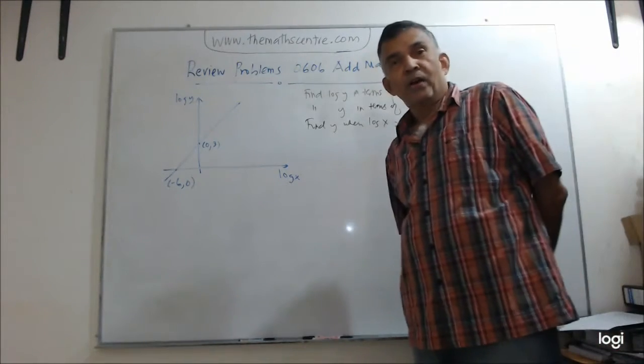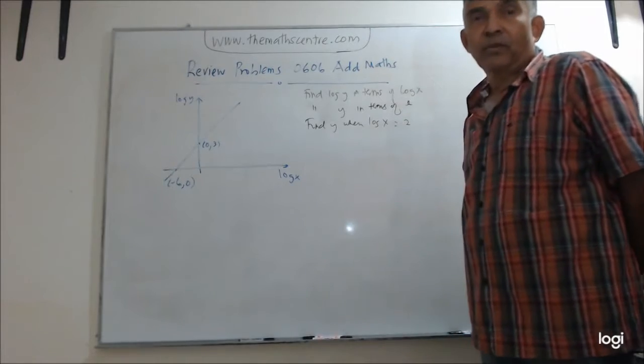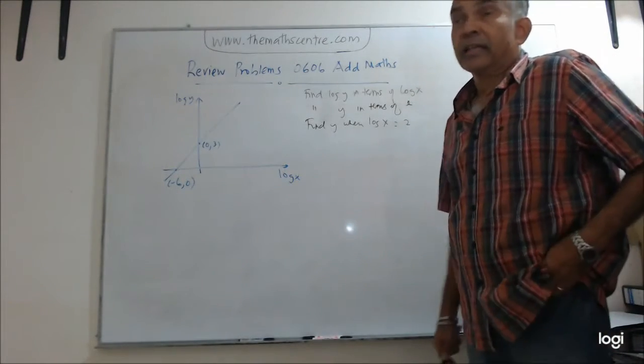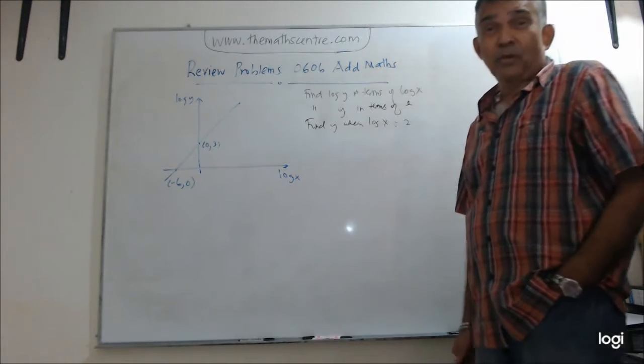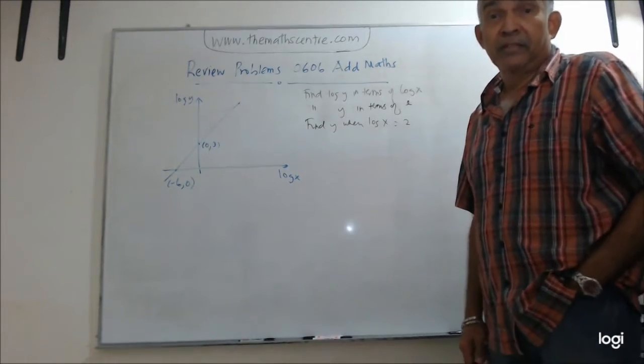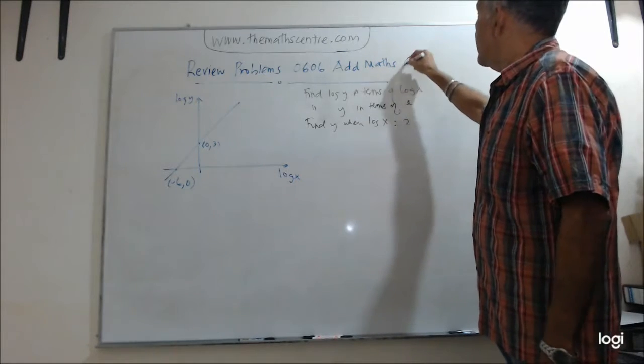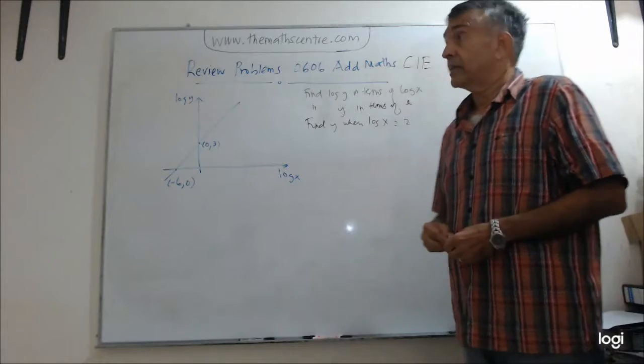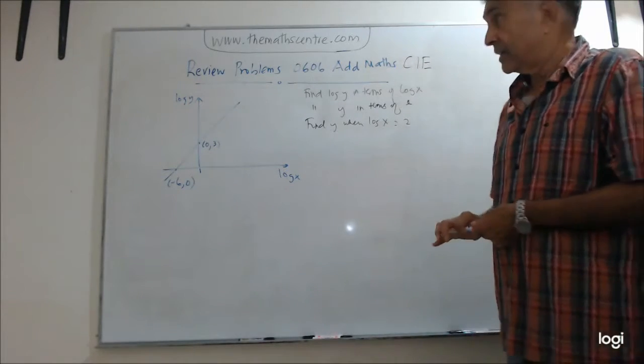Hi, welcome to themathcenter.com. In this series of videos that we are going to create, we want to look at some review problems. Let me just call them review problems for the AdMaths exam 0606. We are looking at the CIE IGCSE exam, right? Okay, the subject code is 0606, AdMaths. I think enough said about that.